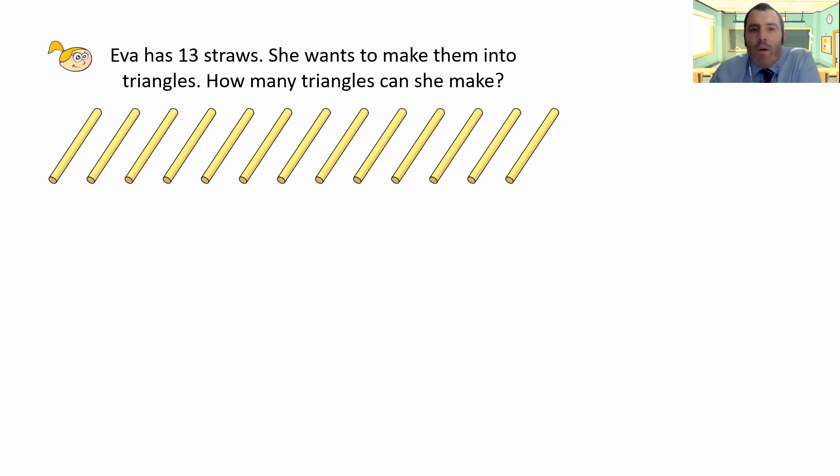We need to think about actually what the question is that we're being asked. So what could the question be? If you said 13 divided by 3, you'd be right. What we were asking for, we're being told Eva's got 13 straws. She's making triangles. So we need to remember that triangles have got three sides. So we'll need three straws for each triangle.